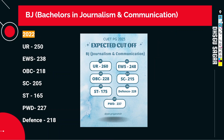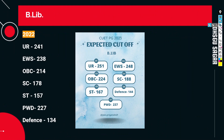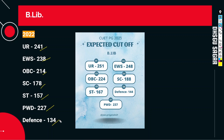For the expected cutoff in the merit list: UR 260, EWS 248, OBC 228, SC 215, ST 175, Defense 228, PWD 237. This is the first merit list. After this, a second and third also come. If seats remain empty, the cutoff also comes down from this. So if your marks are between these two, your admission is confirmed. Special counseling is also held for sports quota and defense quota.